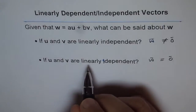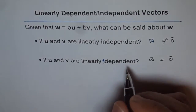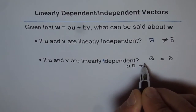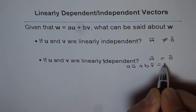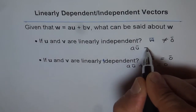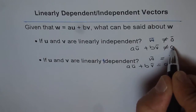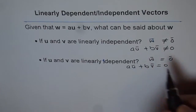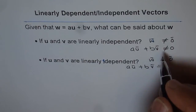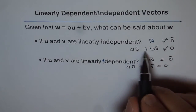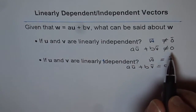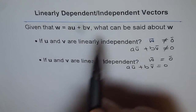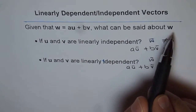For linearly dependent vectors, the equation is a·u plus b·v is equal to 0. And if a·u plus b·v is not equal to 0, then it is independent — until and unless both a and b are 0. We are assuming here that both a and b are not equal to 0. Given that w equals a·u plus b·v, what can be said about w if this be a zero vector.